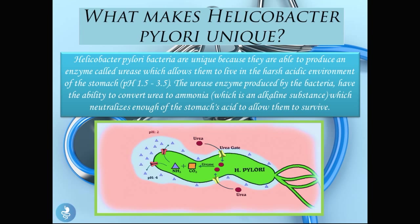So what makes Helicobacter pylori unique? Helicobacter pylori bacteria are unique because they are able to produce an enzyme called urease, which allows them to live in the harsh environment of the stomach, which has a pH of 1.5 to 3.5 — a highly acidic environment. The urease enzyme produced by the bacteria converts urea to ammonia, which is an alkaline substance that neutralizes enough of the stomach's acid to allow them to survive. Looking at the diagram, we can see the H. pylori bacteria producing urease.